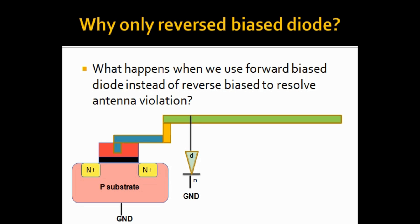You might wonder why we use only reverse biased diodes and not forward biased diodes. Reverse biased diodes conduct only at very high potential, whereas forward biased diodes need very little potential to conduct. Our designs normally work at much lower voltages — say zero to five volts. A forward biased diode starts conducting at only 0.7 volts. If you're applying zero to five volts, current would start flowing through the diode to ground instead of reaching the gate, hampering the normal operation of the circuit.